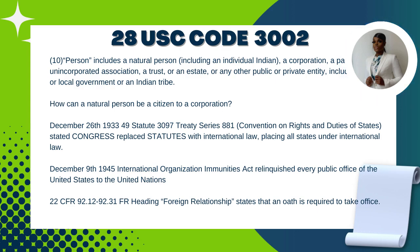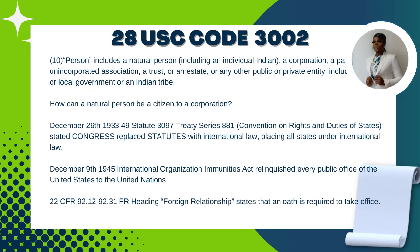On December 26, 1933, 49 Statute 3097, Treaty Series 881 — the Convention on Rights and Duties of States — Congress, meaning the United States Congress, replaced statutes with international law, placing all states under international law. Then on December 9, 1945, the International Organization Immunities Act relinquished every public office of the United States to the United Nations.